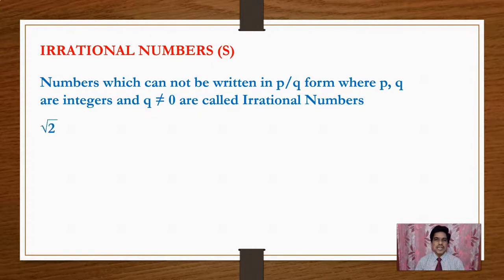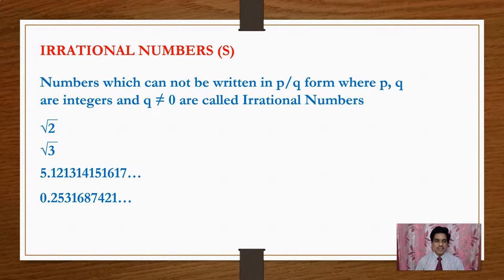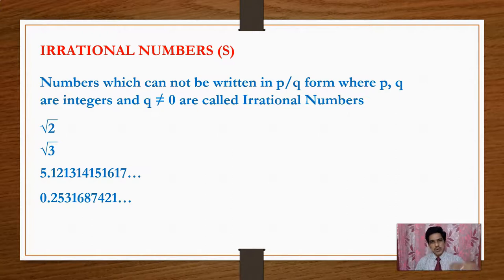Examples of Irrational Numbers include root 2, root 3, and numbers like 5.12131415 and so on, or 0.25310... and so on. You can write many examples of Irrational Numbers on your own. Non-terminating and non-recurring decimals are Irrational Numbers.